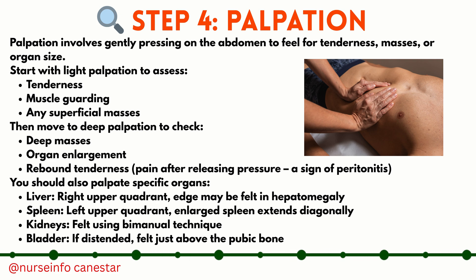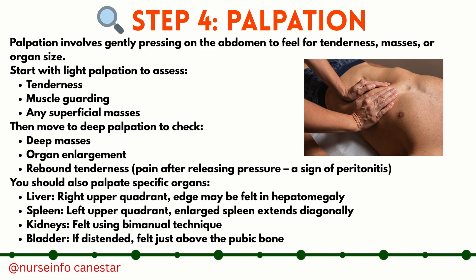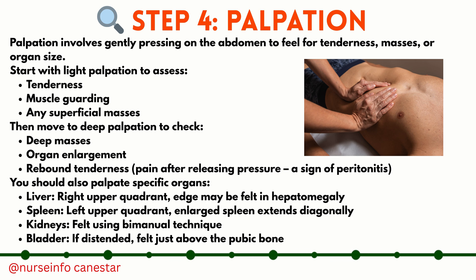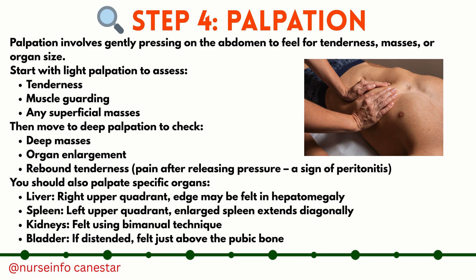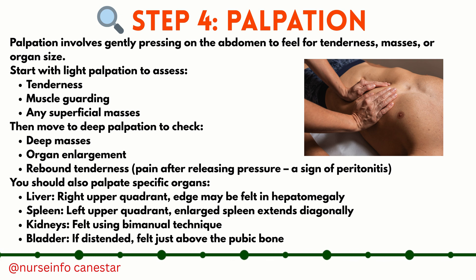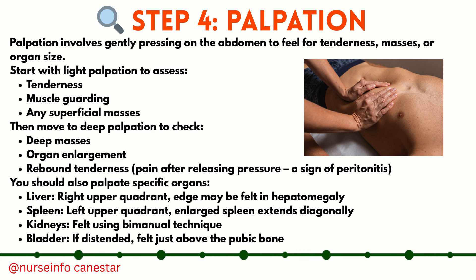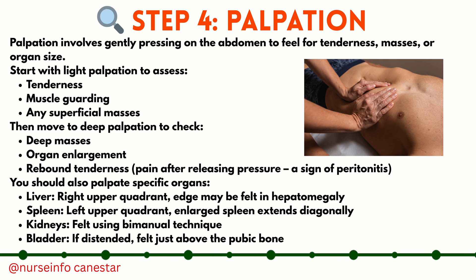You should also palpate specific organs. The liver is in the right upper quadrant — its edge may be felt in hepatomegaly. The spleen is in the left upper quadrant — an enlarged spleen extends diagonally. The kidneys are felt using a bimanual technique. The bladder, if distended, is felt just above the pubic bone.